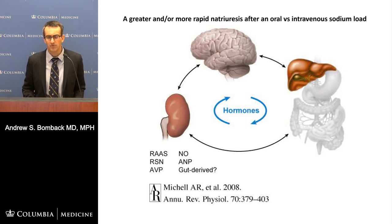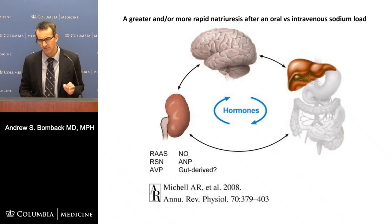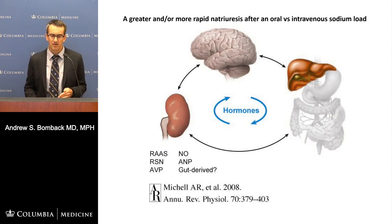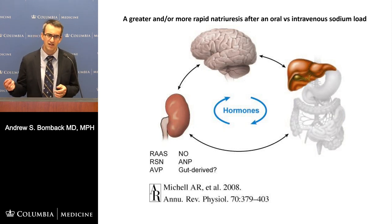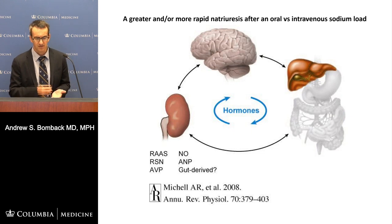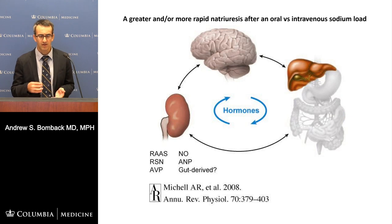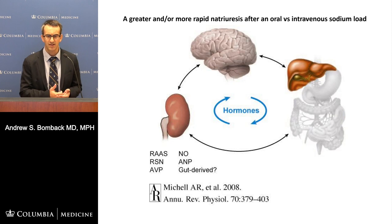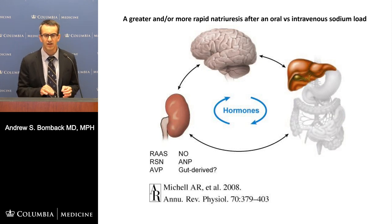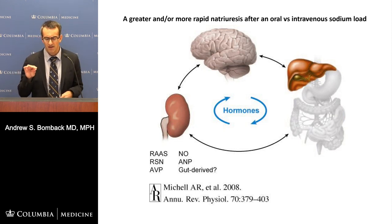It's a bit more complicated, because we've learned it's not just the kidney but other organs involved in the response to salt loads. The most exciting advances have been in understanding what we call the gastro-renal axis — the communication between the GI tract and the kidney in response to salt loads. Surprisingly, you get a greater and more rapid natriuresis after ingesting an oral sodium load compared to an intravenous load. That's because of this quick, efficient communication between the gut and the kidney — the gastro-renal axis.